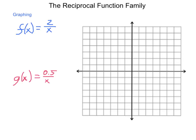We're going to graph f of x equals 2 over x, and on the same grid, g of x equals one-half over x. We'll start by establishing that the scale on this graph is 1 in any direction. Building our table with x and f of x, we cannot put 0 in, so that's going to be a vertical asymptote.